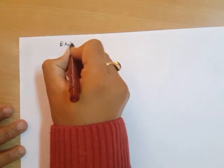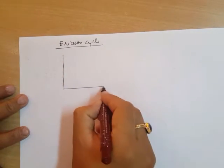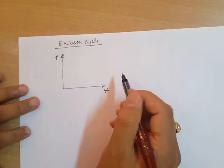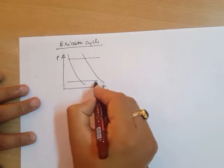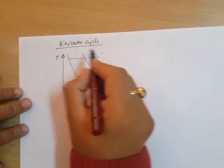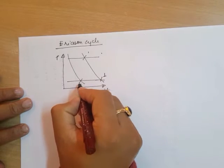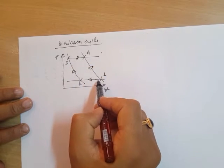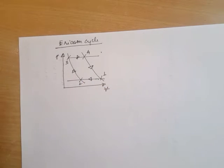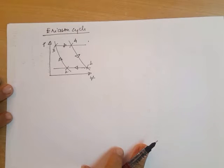Good morning friends, today I will be discussing the Ericsson cycle, and if time permits, the Brayton cycle also. The Ericsson cycle is a standard cycle which comprises two isobaric processes and two isothermal processes. On a P-V diagram with points one, two, three, and four, this cycle has two constant pressure processes and two constant temperature processes.